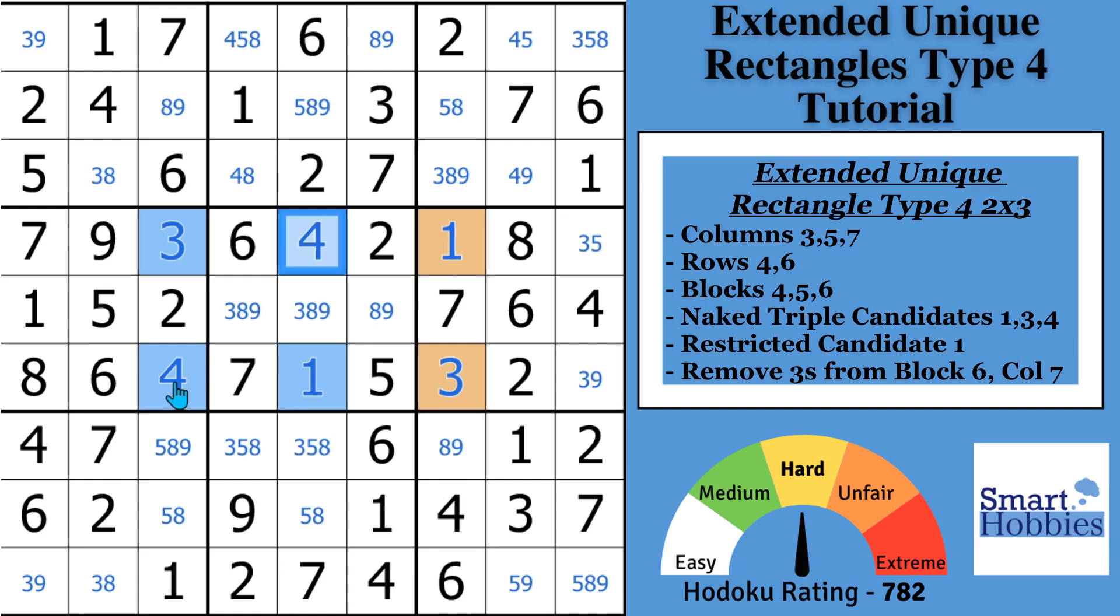That's the problem with this arrangement. If you put a 3 in one of these orange cells, then you end up creating a deadly rectangle because you could fill out 1, 3, 4, 4, 1, 3, just like you see here, and go back and fill out the way I showed you initially. And that can't happen because the puzzle has a unique solution. So what you know is you can eliminate that extra candidate, the 3, that's part of the naked triple from these two cells so that we can force a unique solution. And so you're able to eliminate these two 3s.